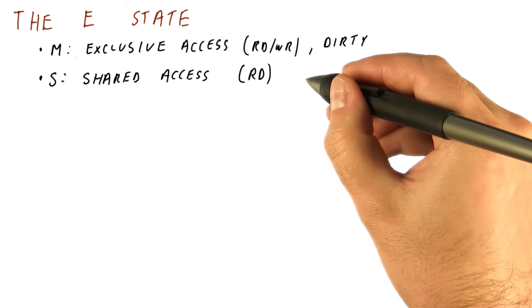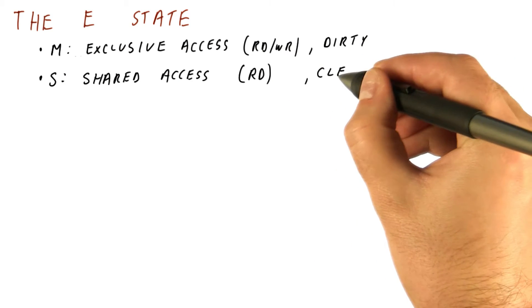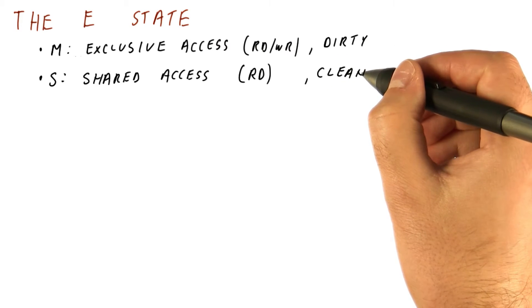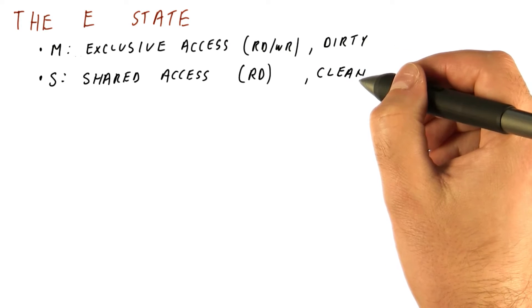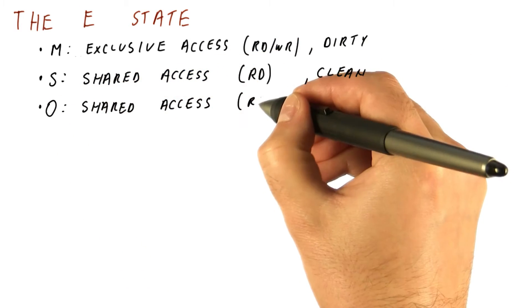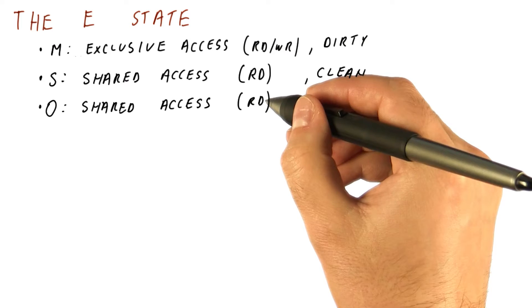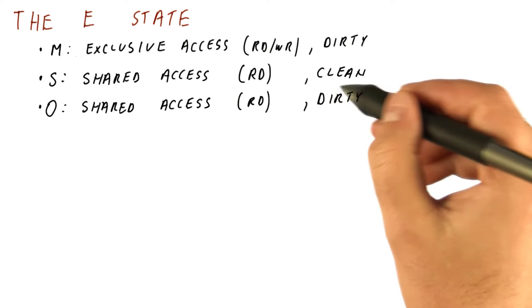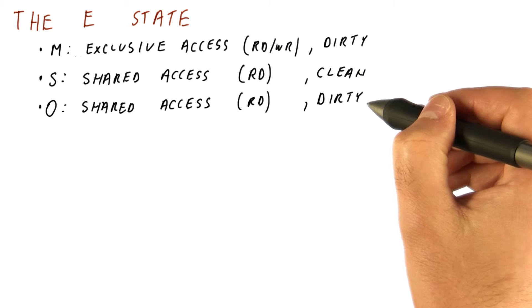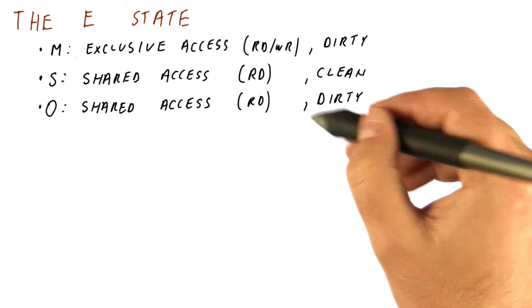The S state gives us shared access so that we can only read and we are not responsible for giving others our data or updating memory. We have seen that the O state also gives us shared access so we can do reads, but makes us responsible for updating memory and giving data to others so that we avoid memory writes that occur when we don't have this state.